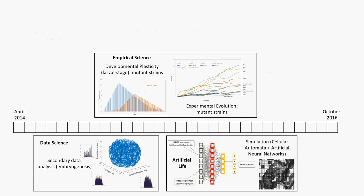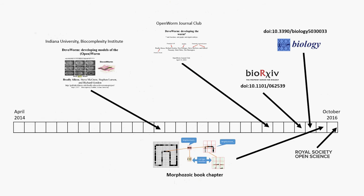We deal with empirical science, data science, and artificial life. If the data science are secondary analyses, the empirical and artificial life components are primary works from our collaborators. And we've actually moved away from that original technical paper and gone in new directions, which have led to a number of other publications.